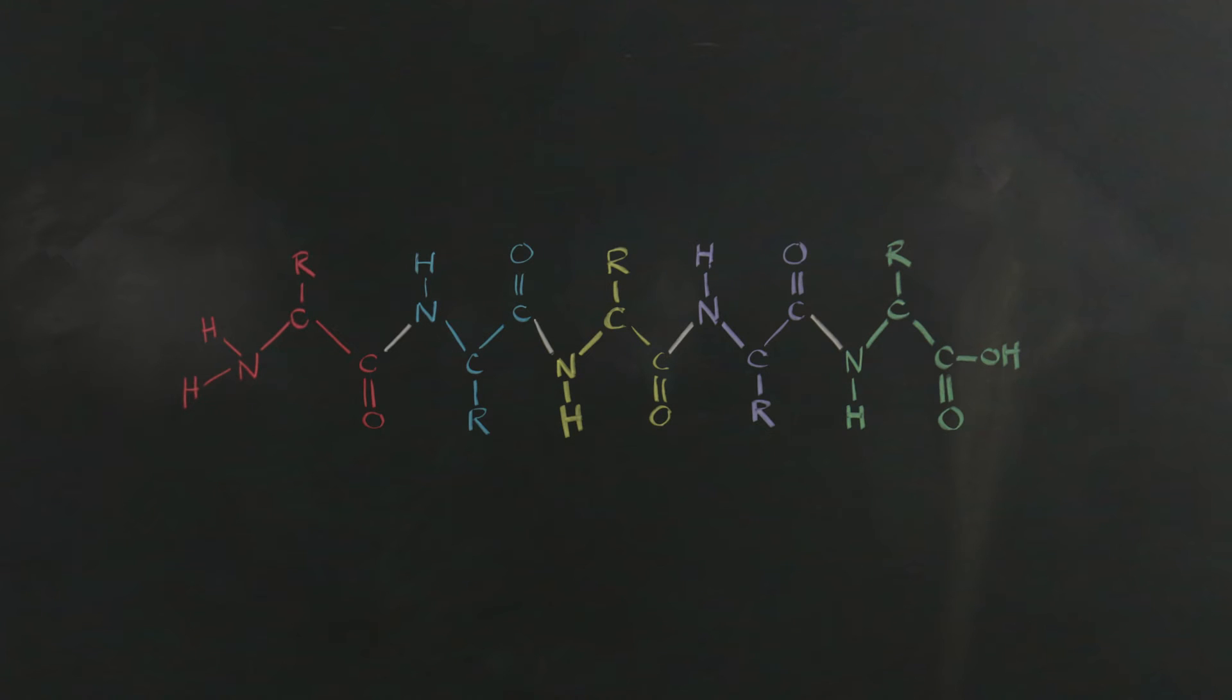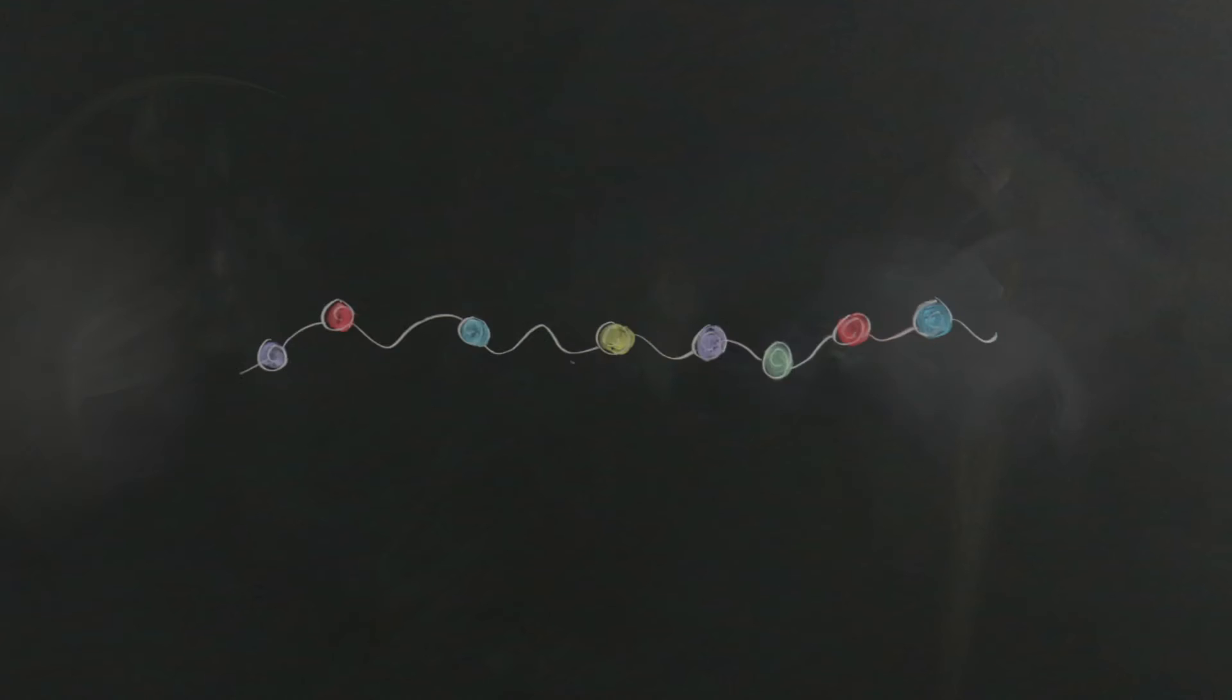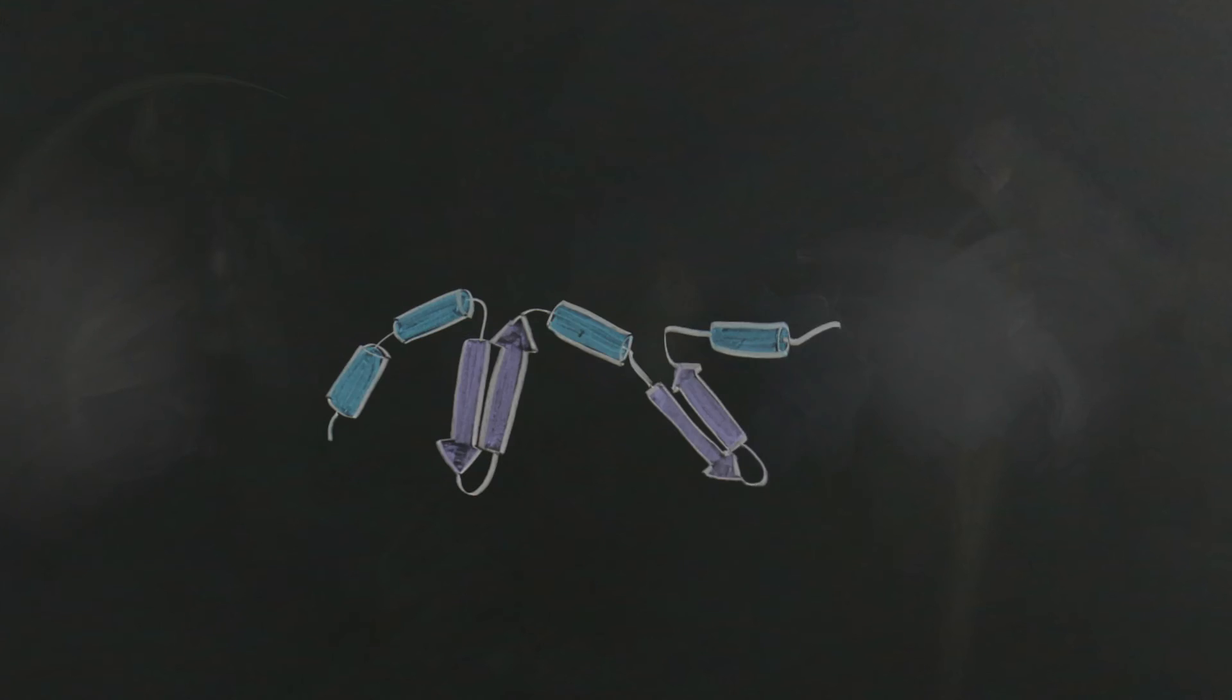What drives proteins to fold into their secondary, tertiary, and quaternary levels of confirmation? The driver is a protein's primary amino acid sequence, which carries the information for its final functional confirmation. But how does the sequence determine a protein's folded structure, and how is this folded confirmation stabilized?